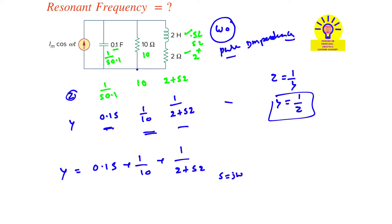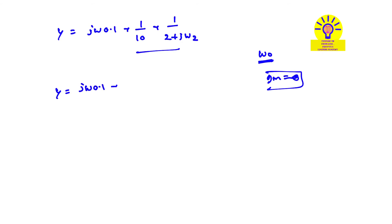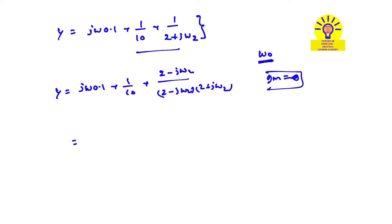Here s = jω. Substituting, the overall admittance becomes Y = j·ω·0.1 + 1/10 + 1/(2 + j·ω·2). At resonant frequency, the circuit acts as a pure impedance, meaning the imaginary part equals zero. Rationalizing the last term by multiplying by (2 − jω2)/(2 − jω2) gives: j·ω·0.1 + 1/10 + (2 − jω2)/(4 + 4ω²).